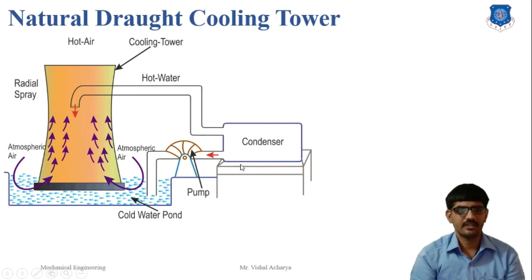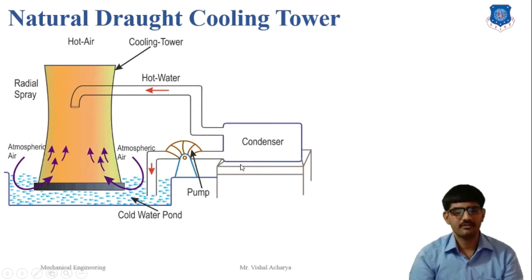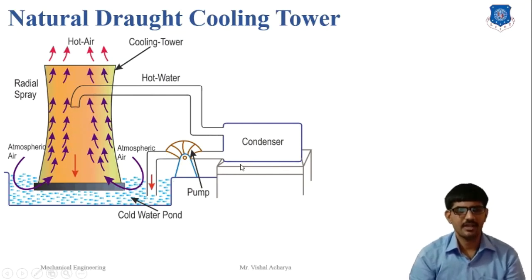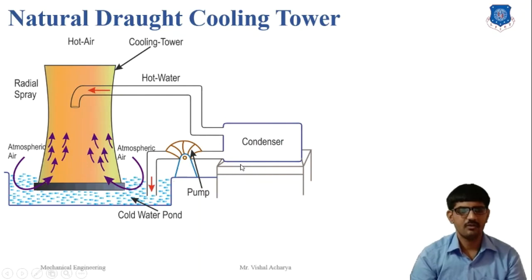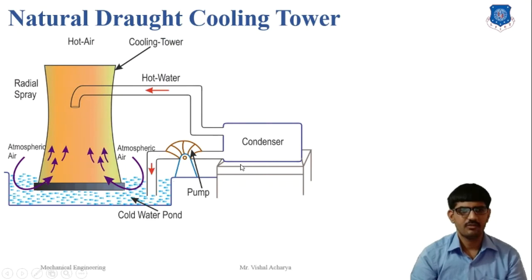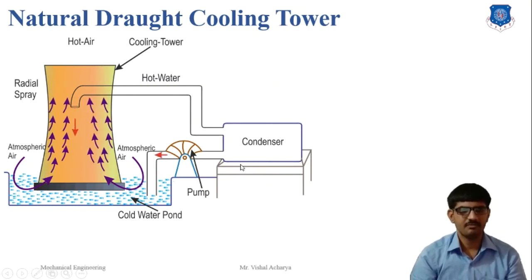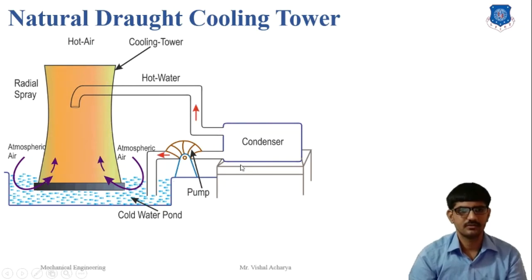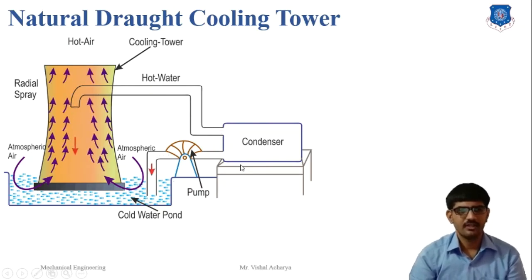The natural draft cooling tower is a simple type of cooling tower where the air supply is natural, without using any mechanical device like a fan or blower. It includes devices like a drift eliminator for preventing water loss outside, and fins or heat exchangers for heat transfer. This type of cooling tower is used in power plants like steam power plants and nuclear power plants.